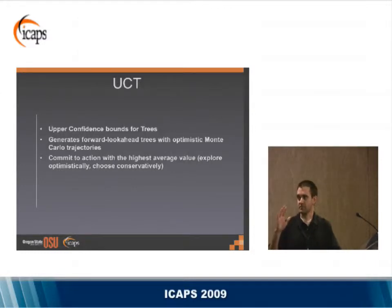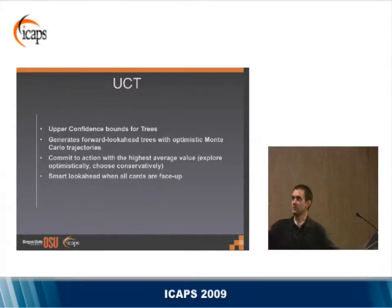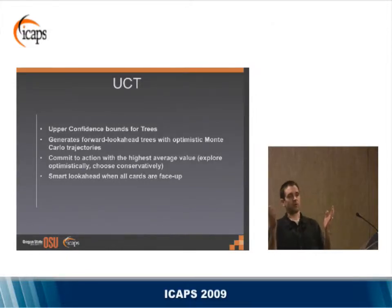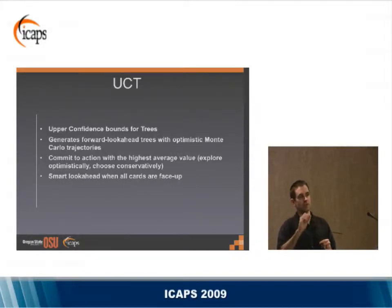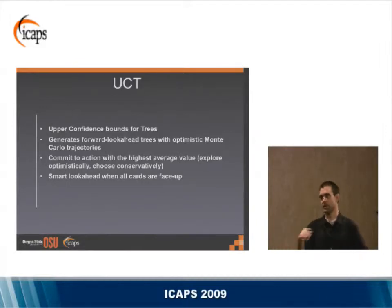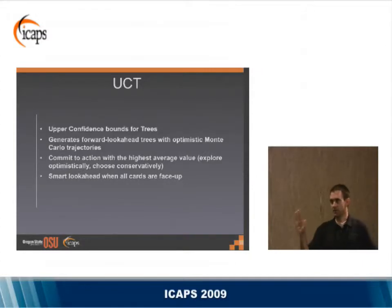One side note about our UCT implementation: once all cards are face-up, we're no longer in a probabilistic problem — it's completely deterministic. So if we reach a state where all cards are face-up, we quickly apply our prioritized action policy to check for a win. If we find one, we count it as a win; if not, we go back to UCT. There's no reason not to do it, it saves time, and it helped us a lot.